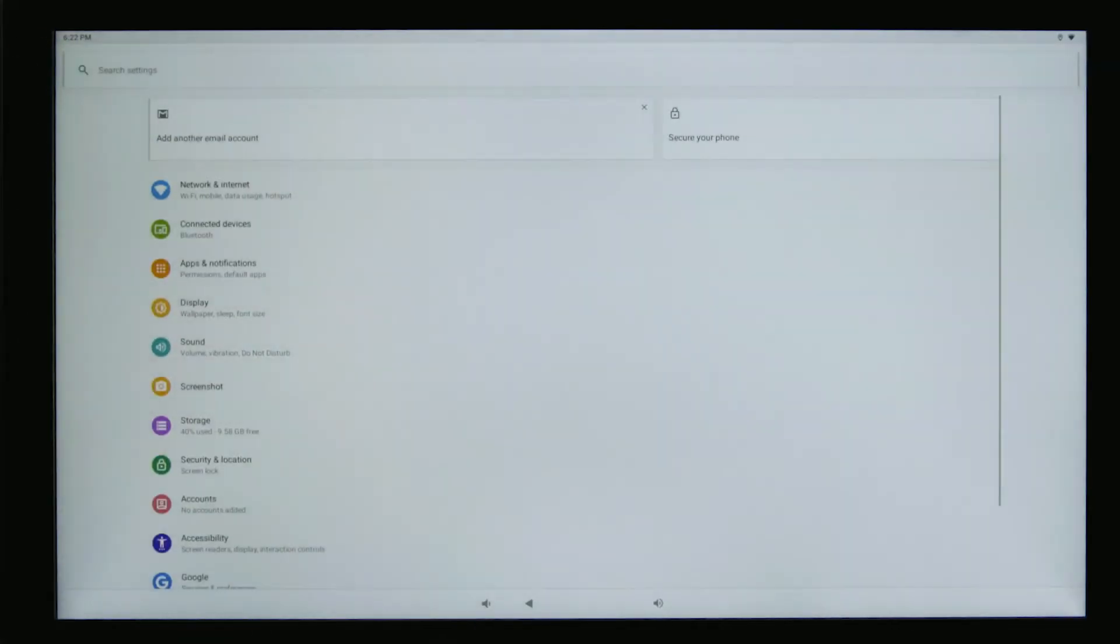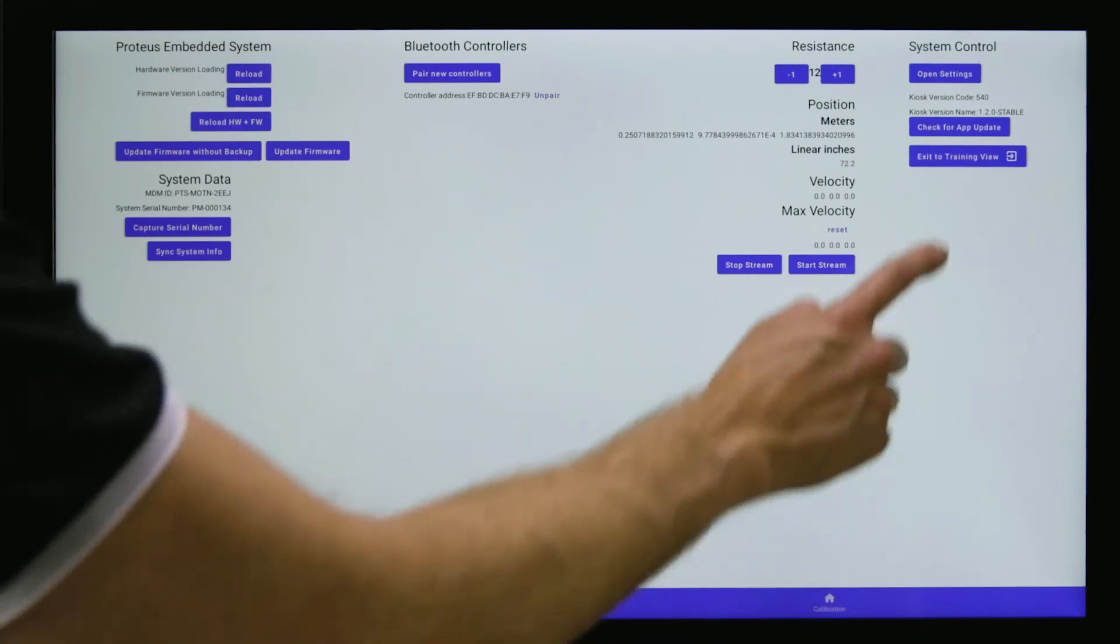To return to the home screen, select the back arrow two times, then select Exit to Training View under System Control.